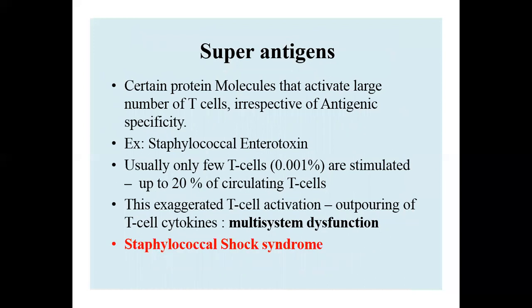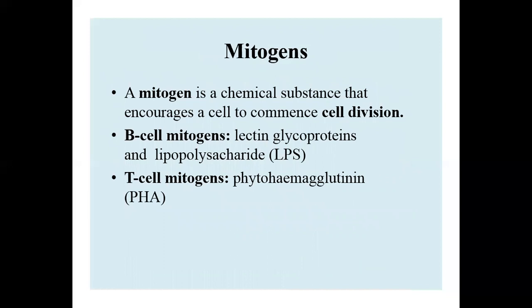Superantigens are certain proteins that activate large numbers of T cells irrespective of antigenic specificity. For example, staphylococcus enterotoxin stimulates an exaggerated T cell activation, leading to massive production of T cell cytokines and multiple system dysfunction, known as staphylococcal shock syndrome. Another type of agent is mitogens, chemicals that encourage cells to commence cell division. There are two types: B cell mitogens and T cell mitogens, which promote production of T cells and B cells in vivo.